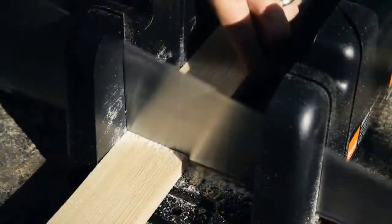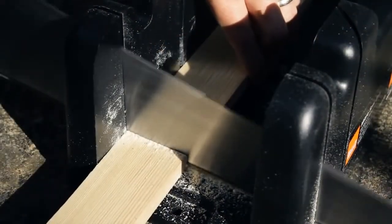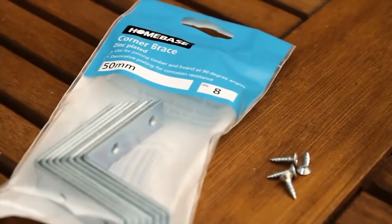These numbers don't have to be exact but the interior dimensions of the frame need to be able to accommodate the rock wall panel. You'll need some corner brace pieces and small screws.